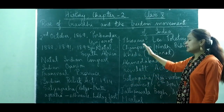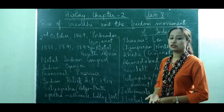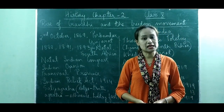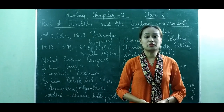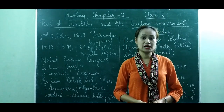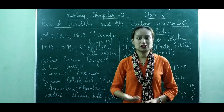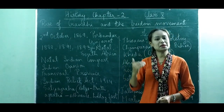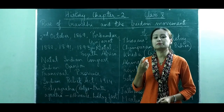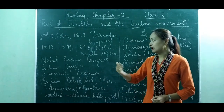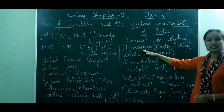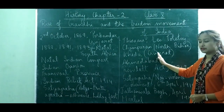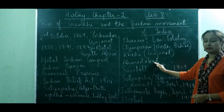In 1915, Gandhiji returned back to India after fighting for the cause of the Indians in South Africa. By that time, the First World War had already started in 1914. After coming to India, he did not sit quietly — he was already a prepared leader. He handled local disputes in Champaran in North Bihar, Khera in Gujarat, and Ahmedabad.